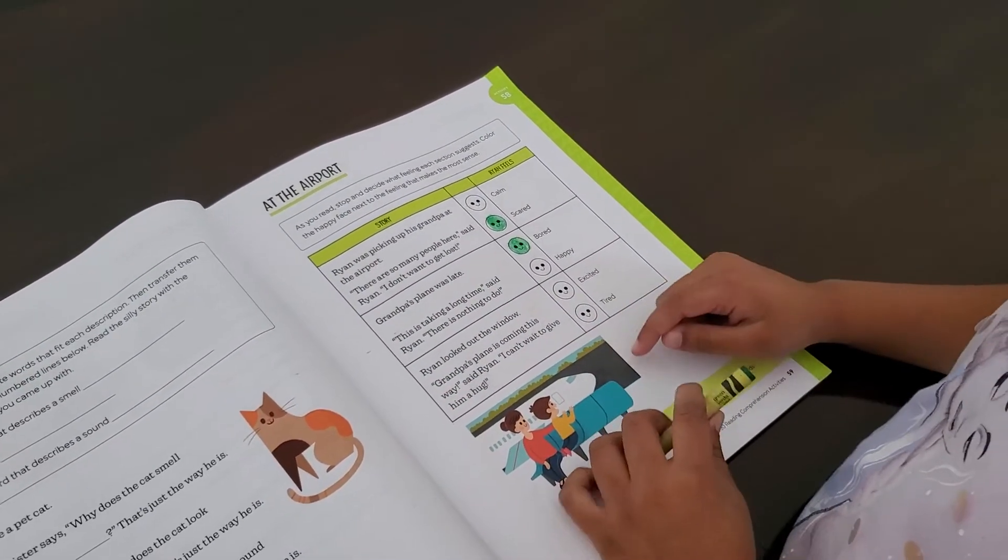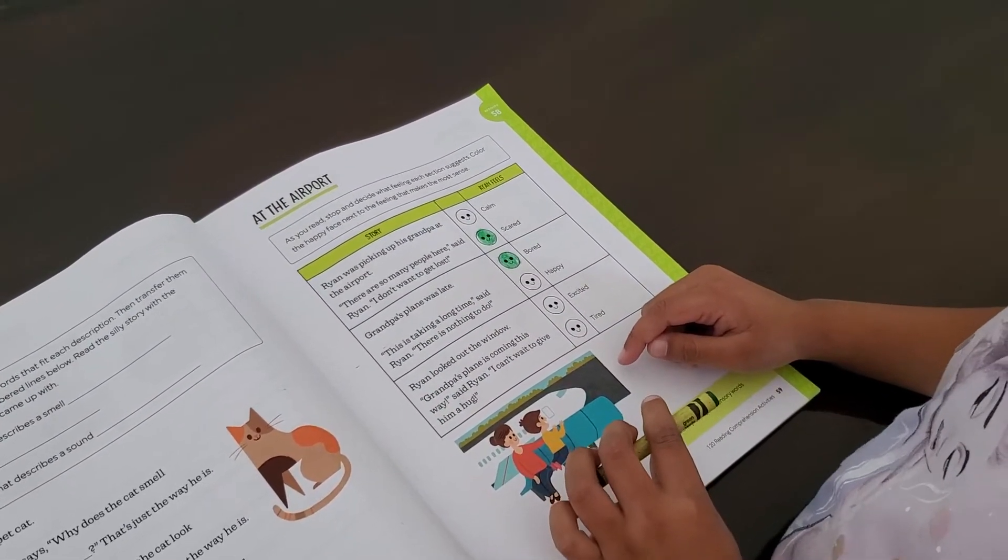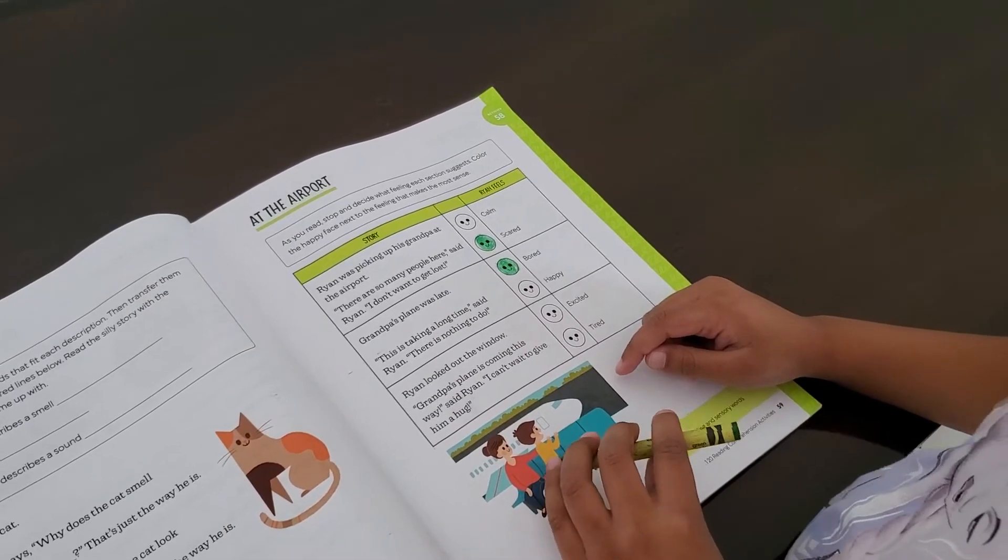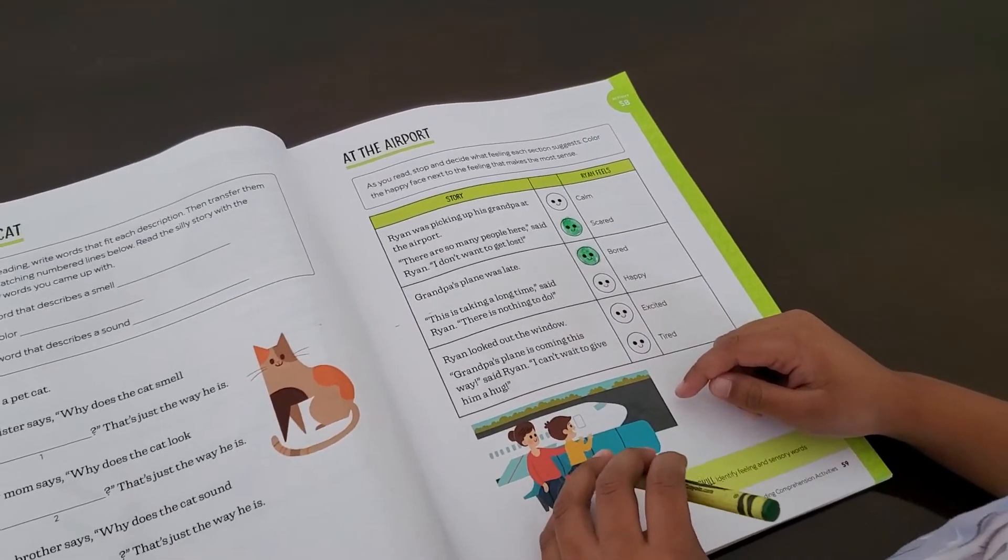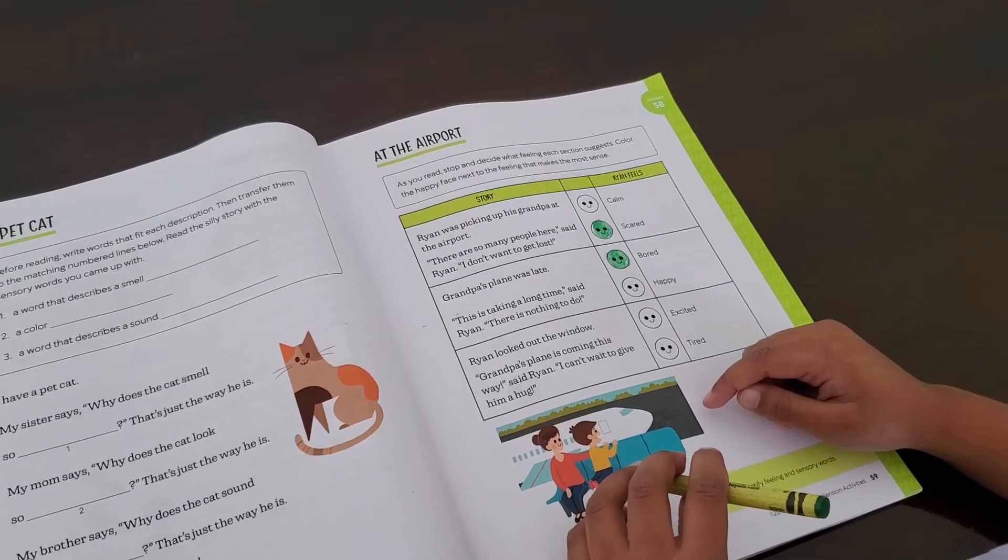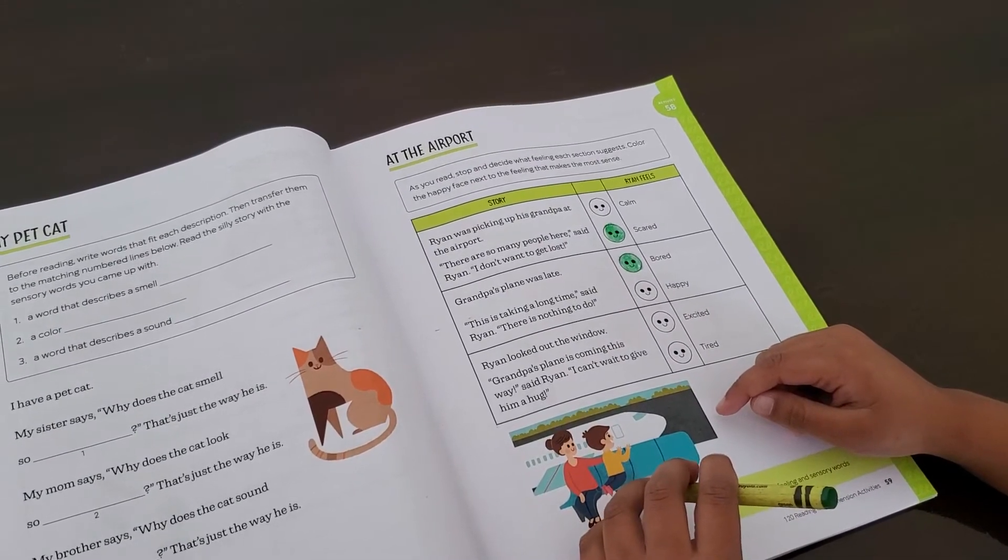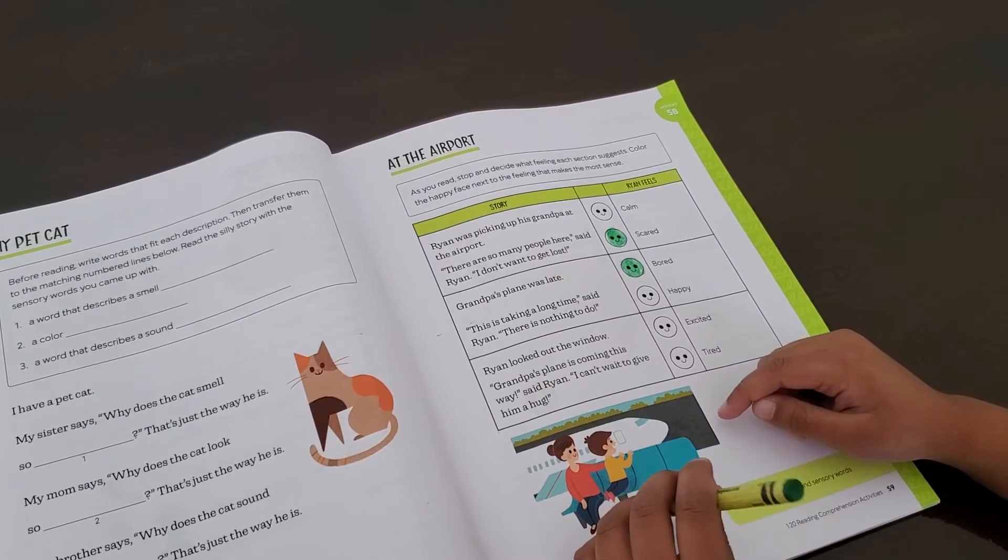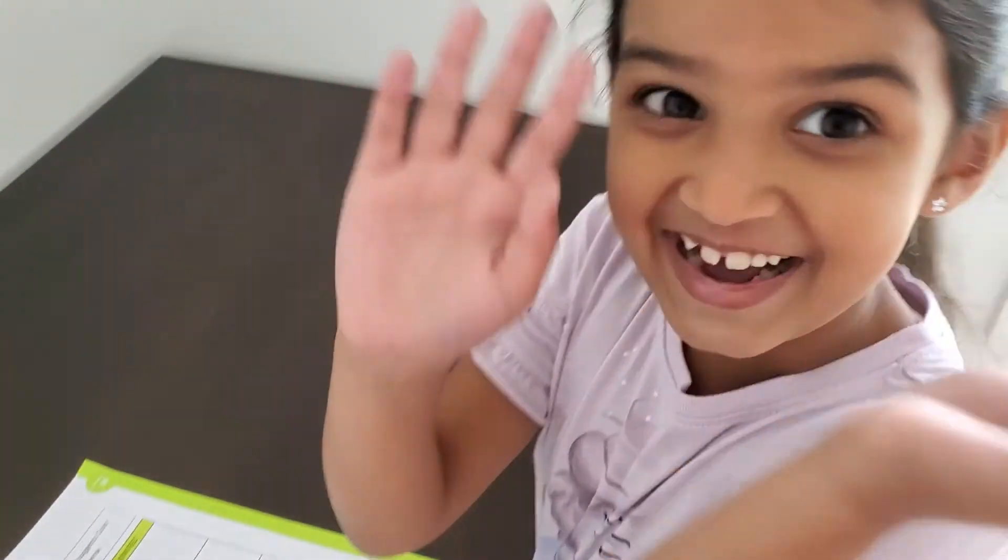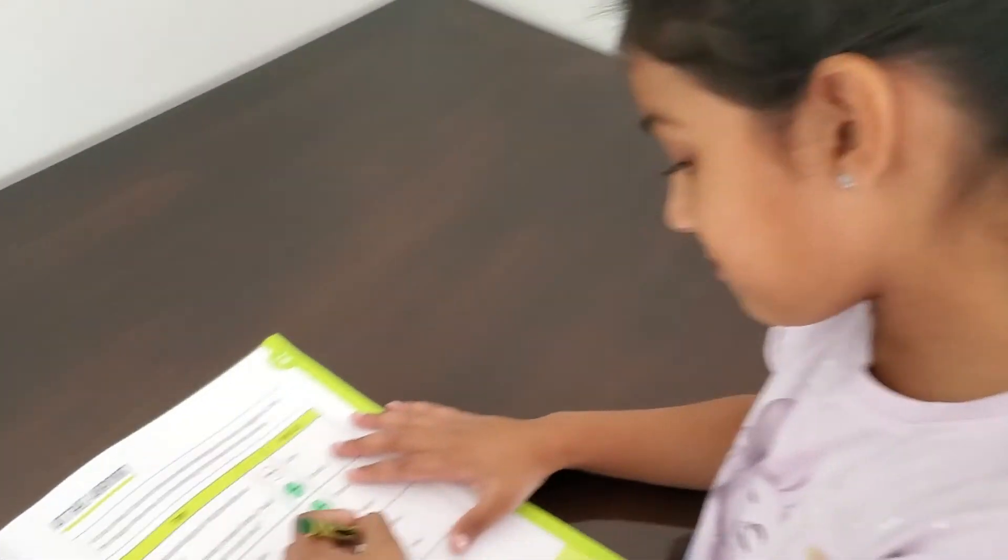Number three. Ryan looked out the window. 'Grandpa's plane is coming this way,' said Ryan. 'I can't wait to give him a hug.' So would he be tired or excited? Excited, because he was happy.